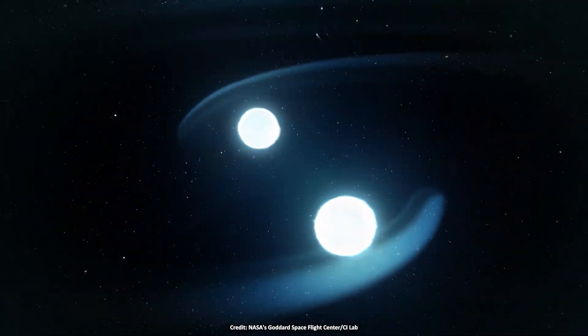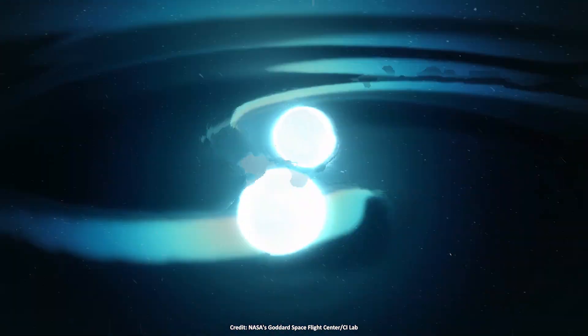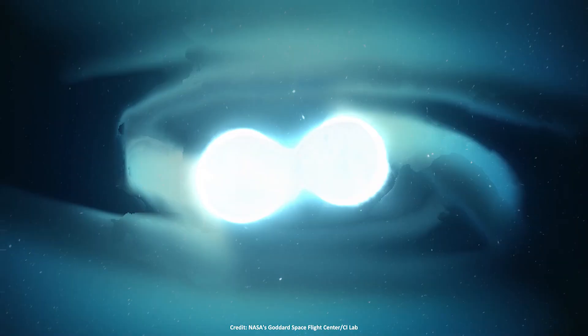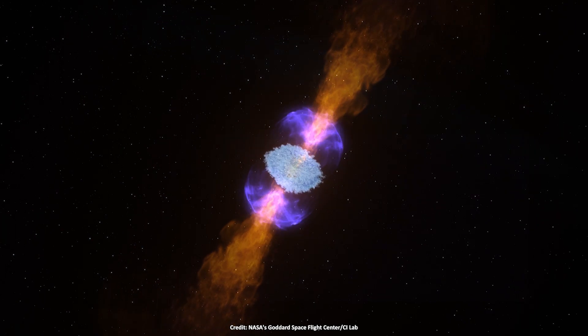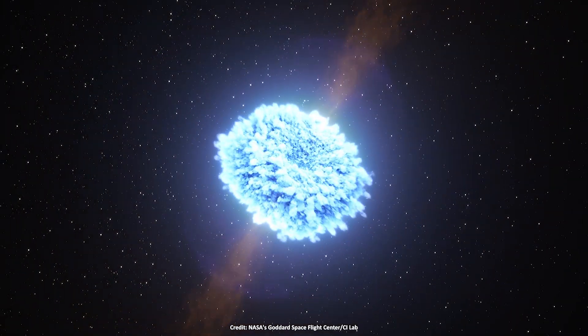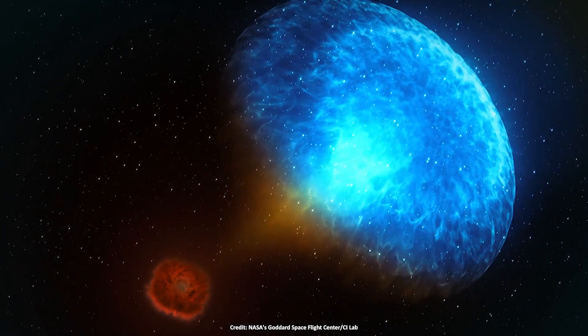Two neutron stars some 130 million years ago in another galaxy spiraled closer and closer together until they crashed into each other, thus sending gravitational shivers through the universe. So astronomers detected the aftermath of the merger on Earth in 2017.